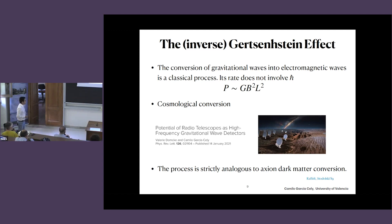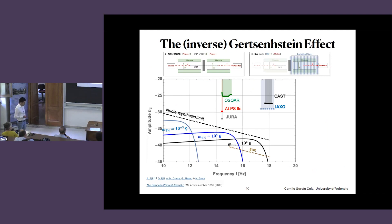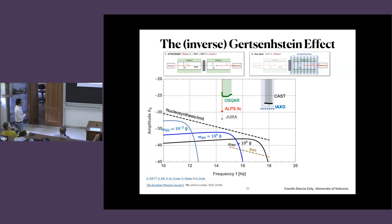You can apply this idea in a cosmological context — I did this with my collaborator Valerie Domke a few years ago. More importantly, this process is strictly analogous to axion-dark matter conversion. People obtained these limits by recasting axion experiments into this framework. Here you can see what ALPS, ALPS II, and the EXO experiment could detect using the inverse Gershenstein effect.